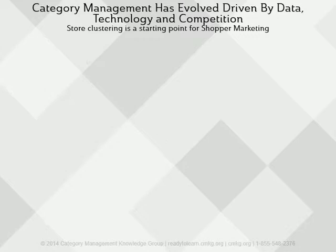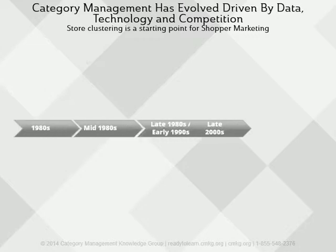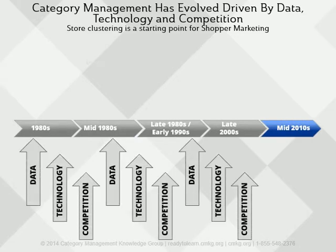As technology and data have evolved over the years, and the retailer battleground for market share has continued, category management has continued to shift and evolve. The scope of category management has evolved and expanded to include new data sources, such as shopper loyalty card data, geodemographic demand, store level point of sale, and shopper insights being added.